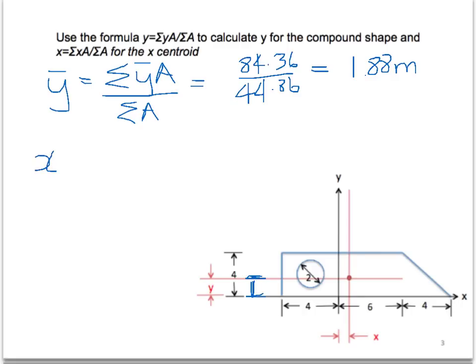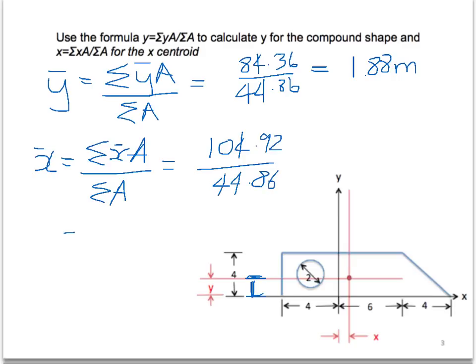So we'll do the same for X bar. That will be 104.92 again over 44.86. This will equal 2.34 metres. And that is this distance here. So now we've calculated the X and Y centre of the shape and that's the end of the question.